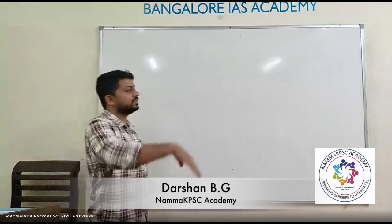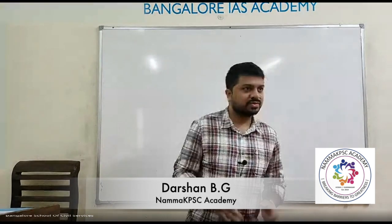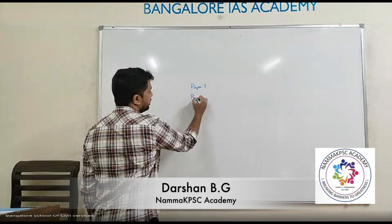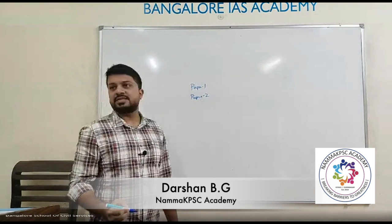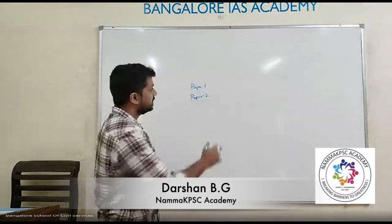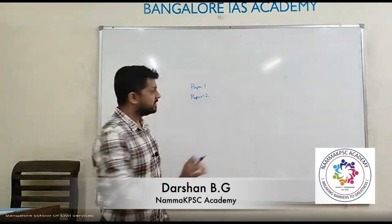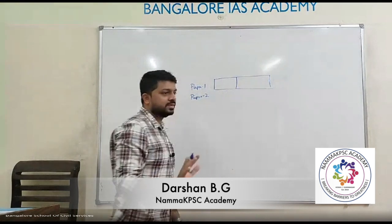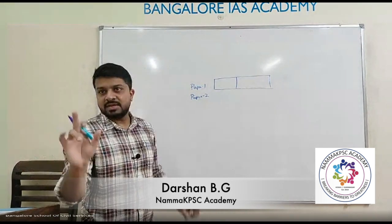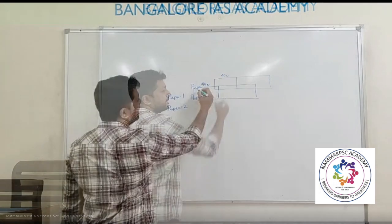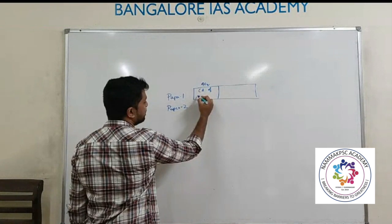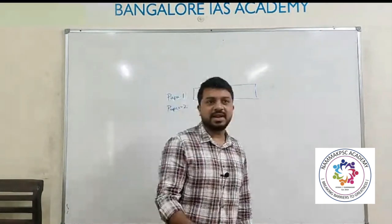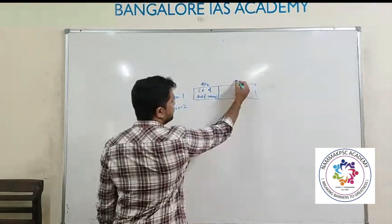Let me give you a brief about the course on Environment and Ecology. Broadly, there are two papers when it comes to prelims — both for UPSC and KPSC. In KPSC Paper 1, the syllabus topics are clearly demarcated. 40 questions in Paper 1 will be from current affairs of state, national, and international importance, and then you have 60 questions from other subjects.